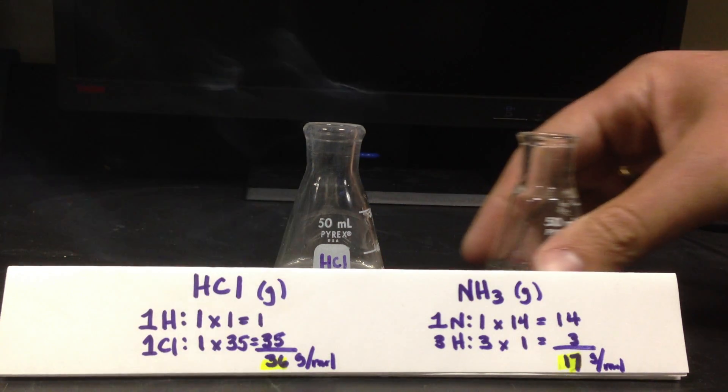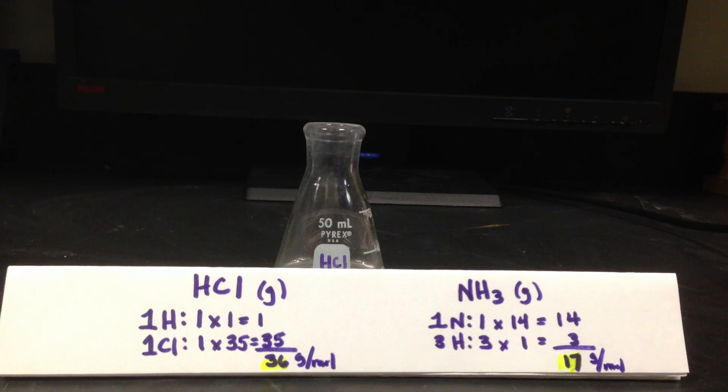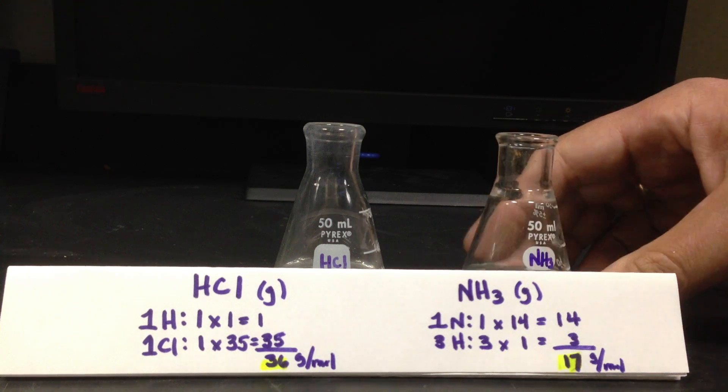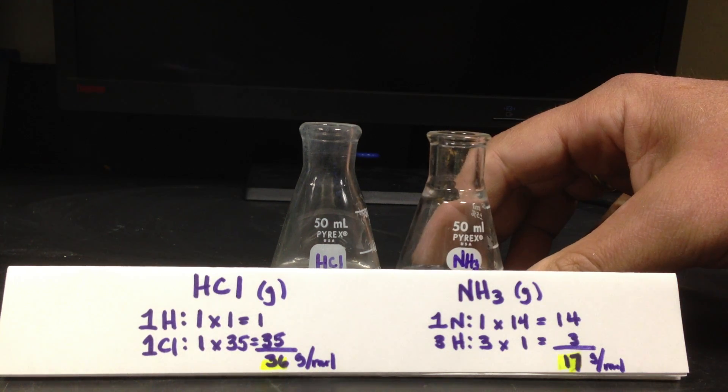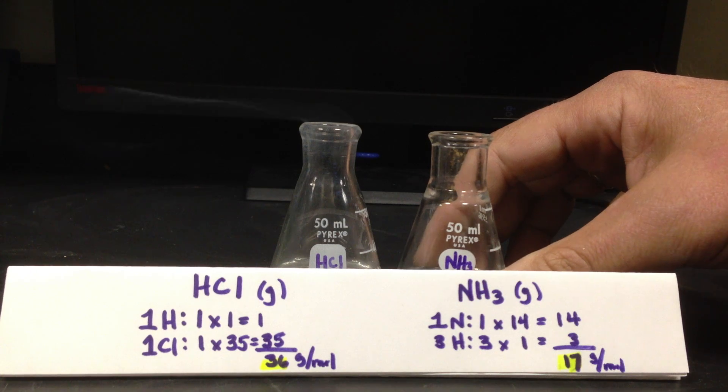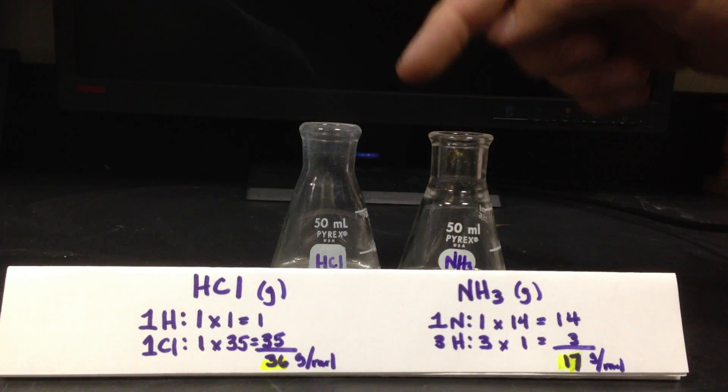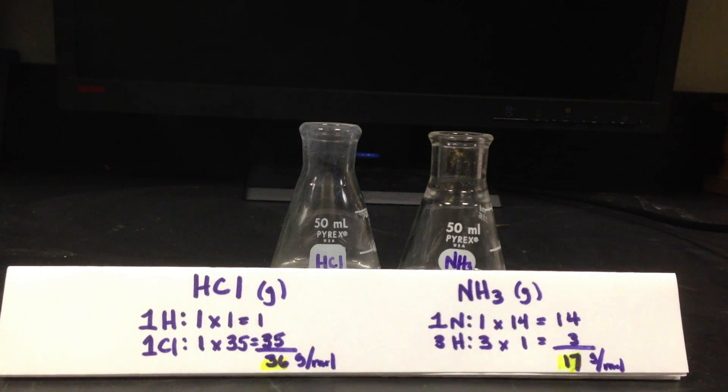Take the ammonia away, and we should stop seeing that white smoke because you don't have the two gases reacting. Put the ammonia back, and that gas is so fast, the white smoke is meeting at this bottle. Not always easy to pick up on camera, but we're seeing that clearly.